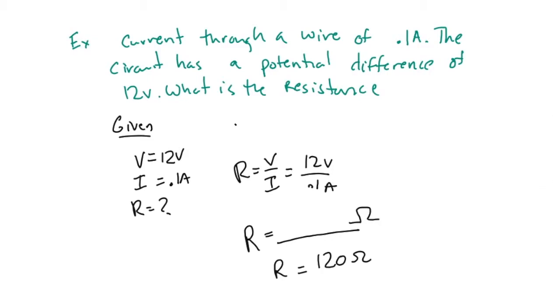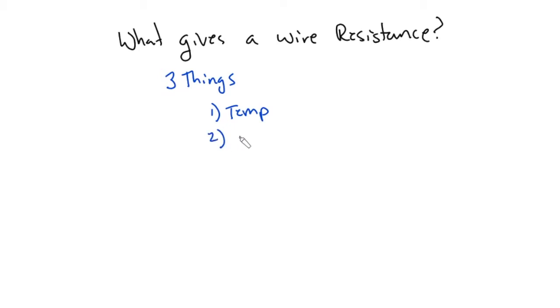Now, you might be asking yourself, what gives a wire resistance? In this course, we're going to see that there's really three things. One temperature, two, the area, the cross sectional area, and three, how long it is.